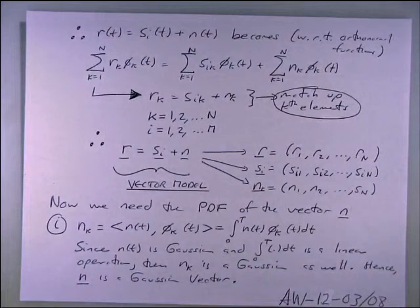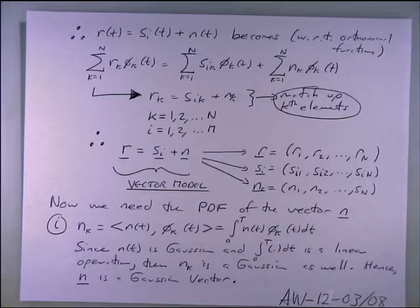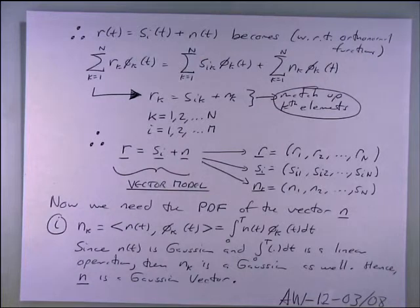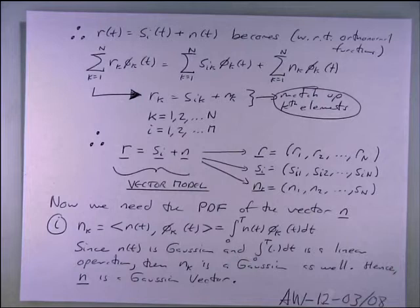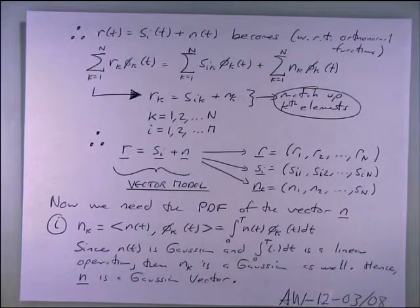We represent the received vector, the transmit vector, and the noise vector in terms of all those vector coefficients. We need the PDF, and I already told you that the noise vector has a joint Gaussian PDF and it's uncorrelated. How do we get that? How do we get each element n_k? We project n(t) onto the k-th basis function: n_k = ∫n(t)φ_k(t)dt.